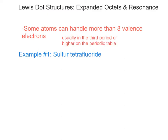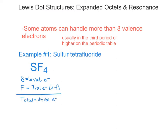Let's take a look at one of those examples: sulfur tetrafluoride. Our approach to drawing Lewis dot structures for expanded octets is going to be the same. Our first step is to find the compound formula — for sulfur tetrafluoride that's SF4. Then I need to calculate the total number of valence electrons. Sulfur has six valence electrons and each fluorine has seven, for a total of 34 valence electrons. Sulfur is going to be my center atom, placed in the middle with all four fluorines around it connected by single bonds.